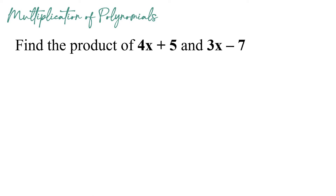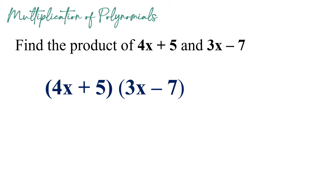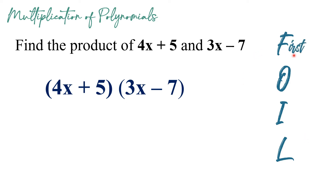Let us have more examples. Find the product of 4x plus 5 and 3x minus 7. As you can see, both polynomials are binomials. When multiplying binomials, we use the FOIL method — F means first terms, O for outer terms, I for inner terms, and L for last terms. For F, we multiply the first term of each binomial: 4x and 3x. 4 times 3 gives us 12, and x times x gives us x squared, since both are raised to 1.